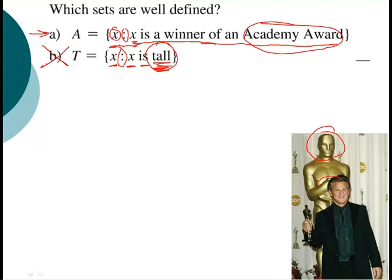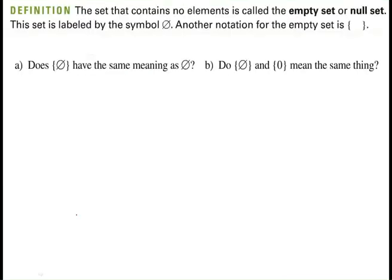Okay, so here we need to discuss the fact, or discuss this symbol there. A set that contains no elements is called the empty set. The set is labeled by the symbol, this guy here is the zero with a line through it. Another notation is this, you put your...